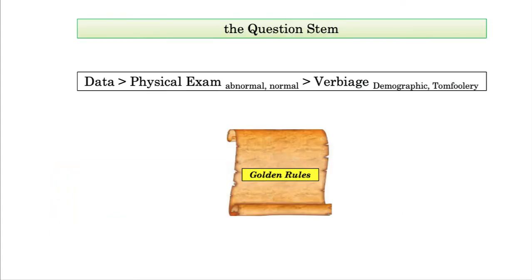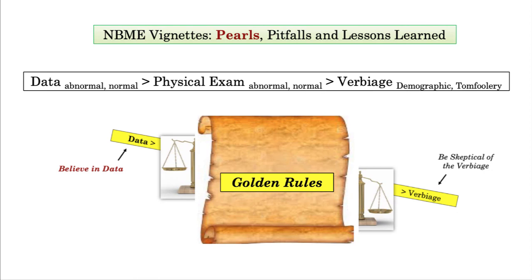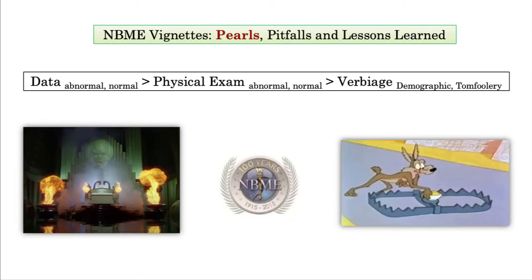And this would be a common physical exam description for a patient with portal hypertension and cirrhosis. So coming back to our original golden rule, you will see that this equation has been modified, focusing on lessons from the physical exam and the verbiage. For data, the formula can also be modified, reflecting both abnormal and normal data. I've included an example with an elevated BUN and creatinine. The abnormal finding rules in the presence of intrinsic renal disease, but the normal ratio of 10 to 1 has excluded pre-renal azotemia as the cause. And here is our completed golden rule: data trumps physical exam, which trumps the stem verbiage. If you follow this rule, you are well on your way to avoiding the treacherous practices of the NBME.